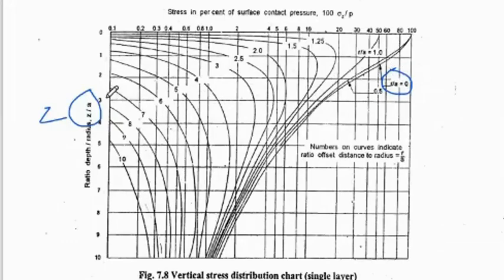From those references, for example this is 3. Z by A is 3 and R by A is equal to 2. So this is R by A equal to 2 line, so here it is cutting. With respect to this, what is the value here? Sigma Z by P. Sigma Z by P is 6.